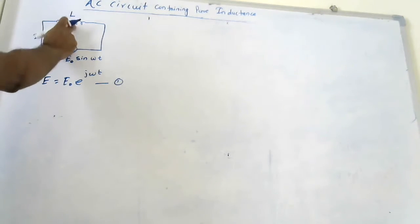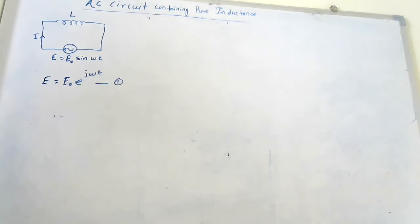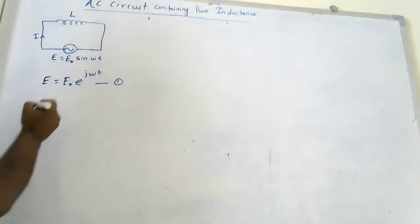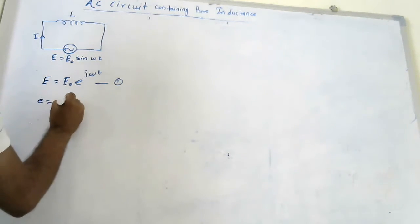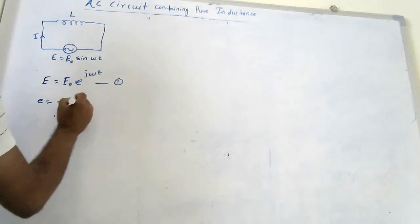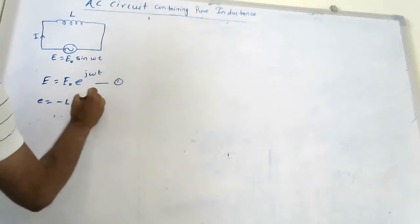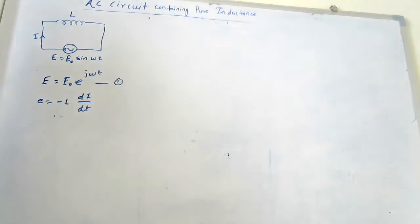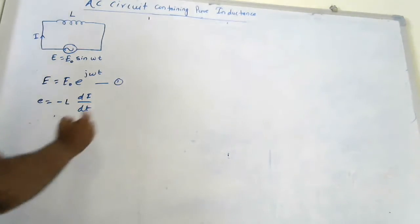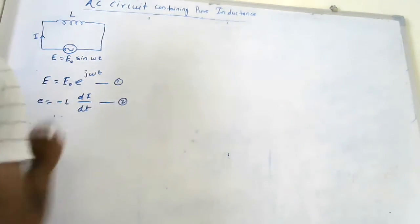The EMF induced across the inductor is E equals to minus L into dI/dt. This is the standard equation of induced EMF across the inductor. This is called equation number 2.